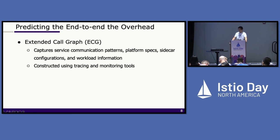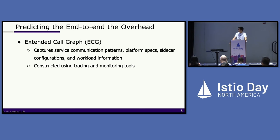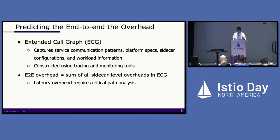With this per-sidecar model, we can go ahead and predict the end-to-end overhead. MeshInsight relies on what we call an extended call graph to predict the end-to-end overhead. It captures the service communication pattern, the platform specifications, the sidecar configurations, and workload information. Extended call graphs can be constructed from distributed tracing or monitoring tools like Jaeger and Grafana. Given the call graph, the end-to-end overhead will just be the summation of all the sidecar overhead in the extended call graph, and for latency, the calculations are based only on the critical path.